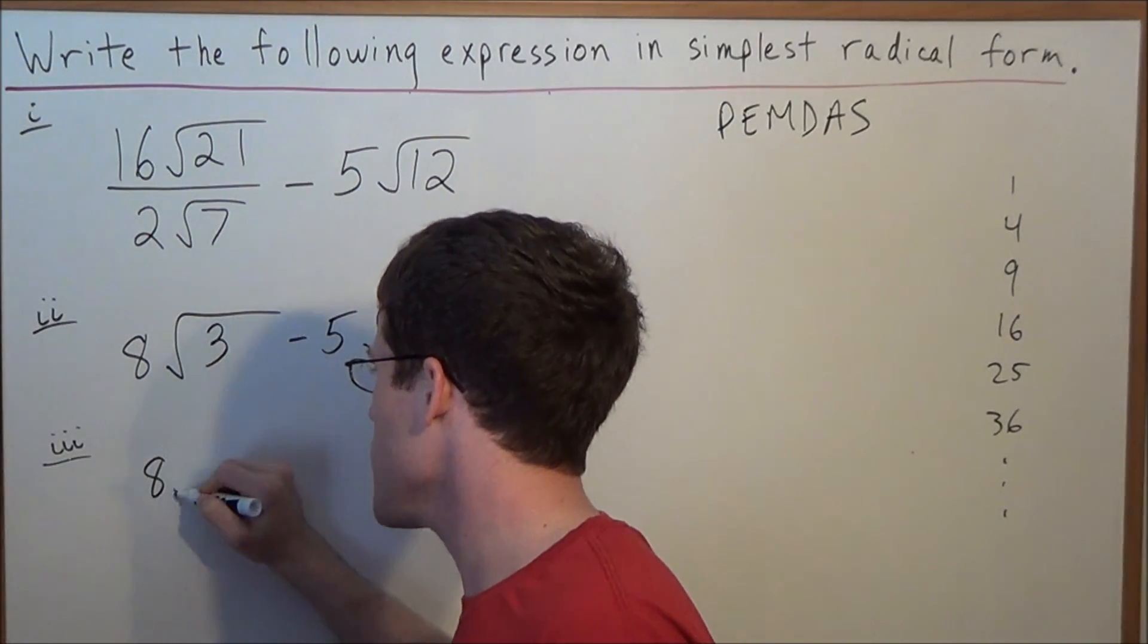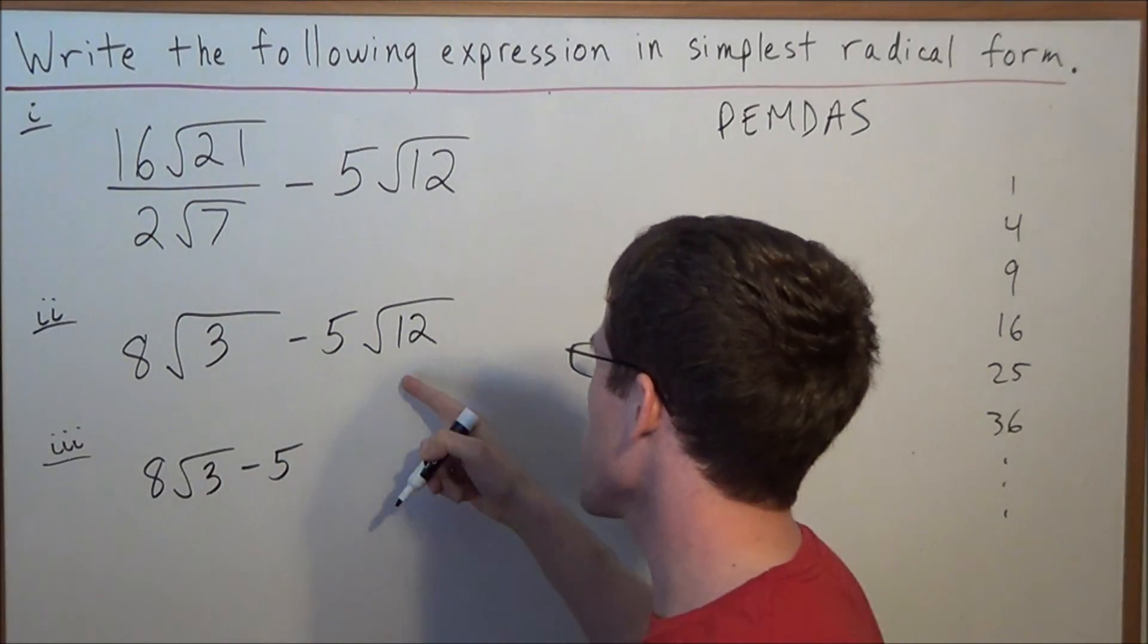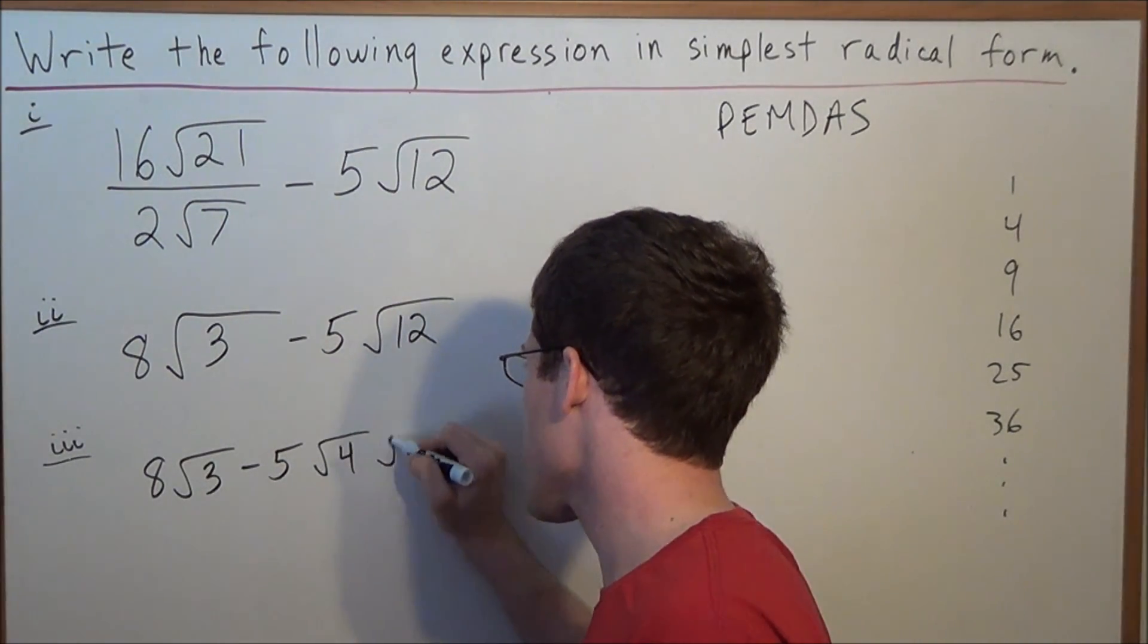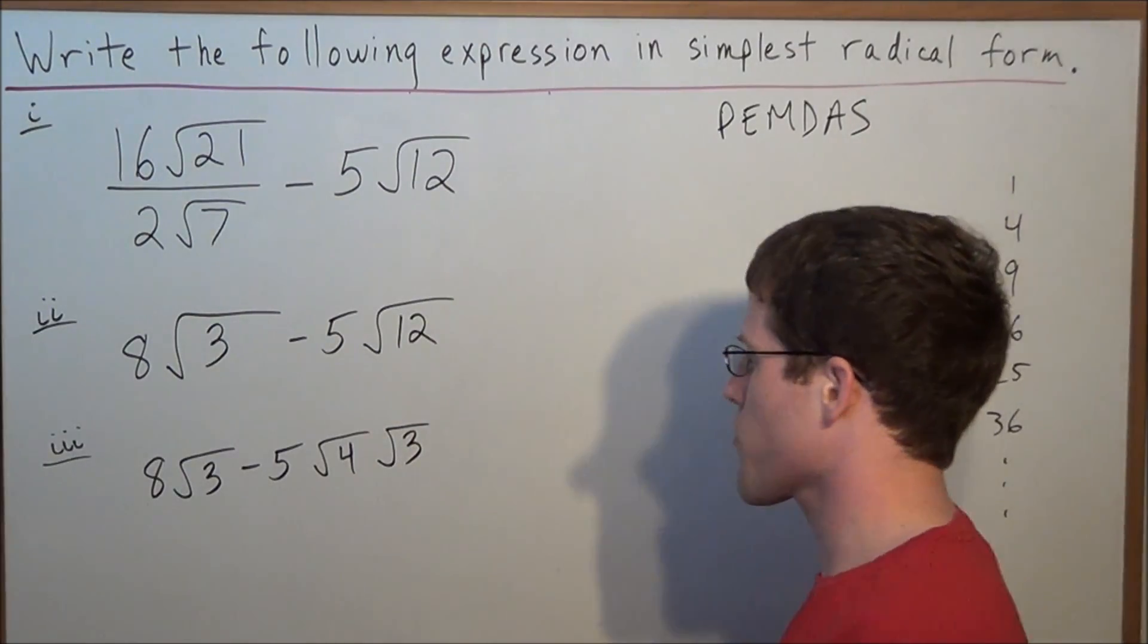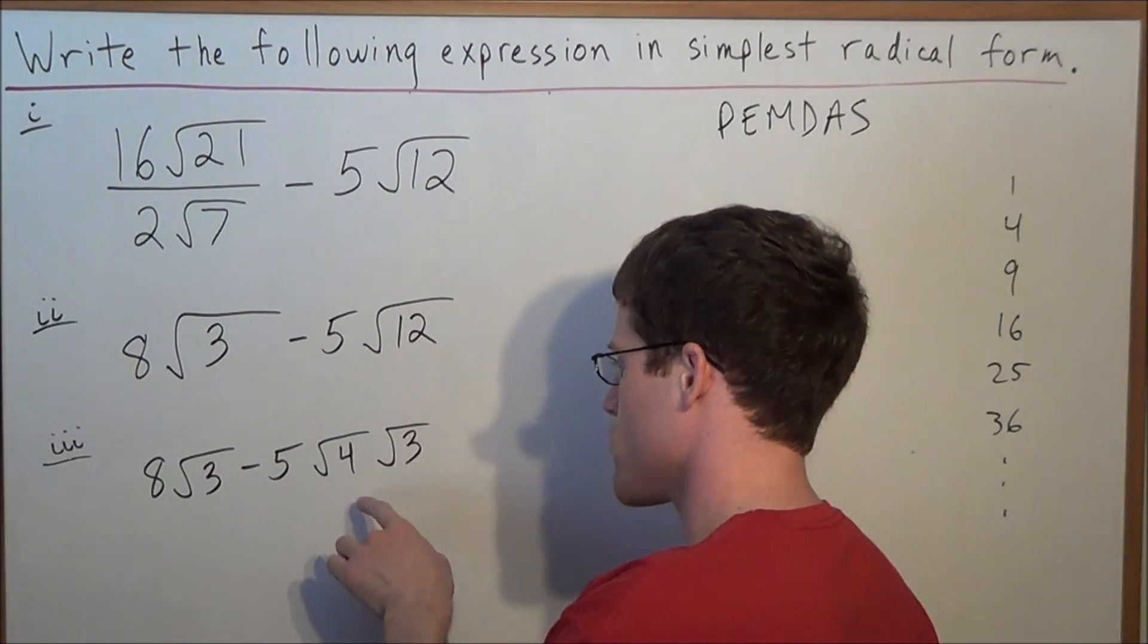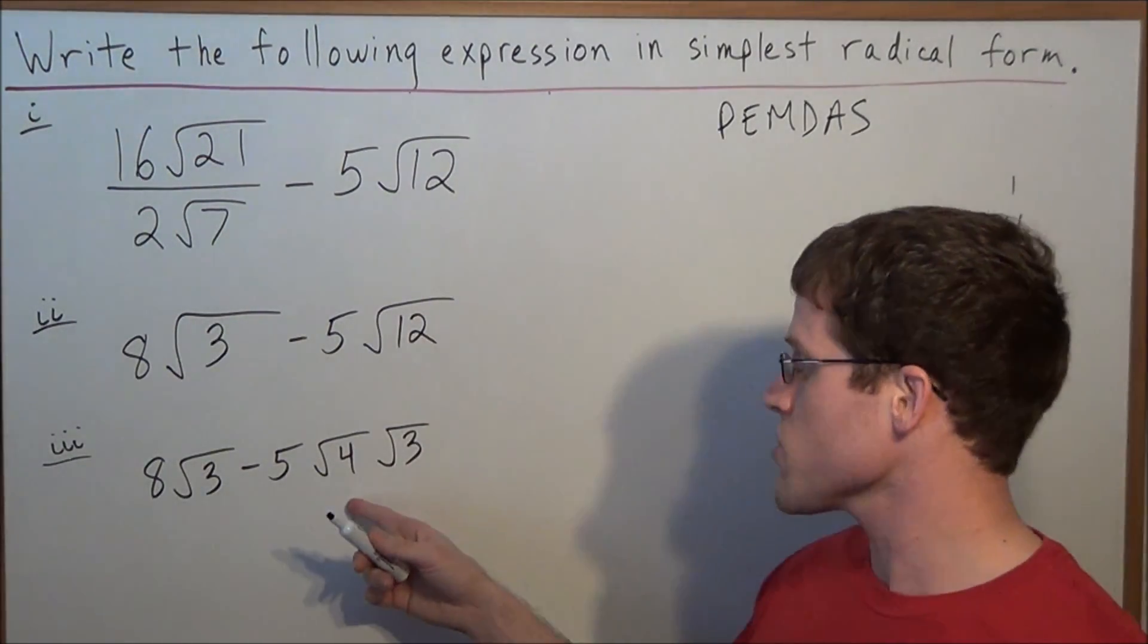So we're just going to rewrite, we have 8 radical 3 minus, and now we have 5, and we can break down radical 12 into radical 4 times radical 3. Because we have 4 times 3 is 12, so we can break radical 12 into 2 radicals, radical 4, radical 3. But the reason why we're choosing this, notice now that we have matching radical 3s.